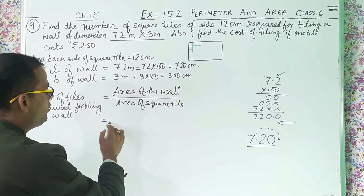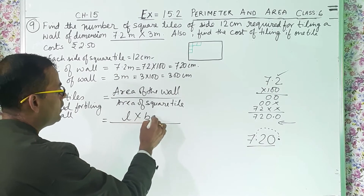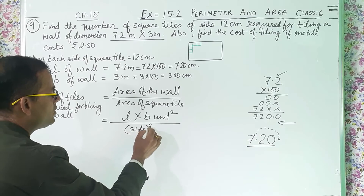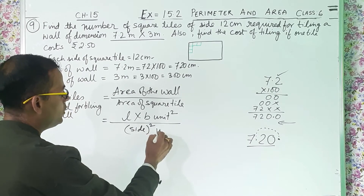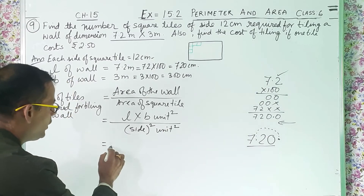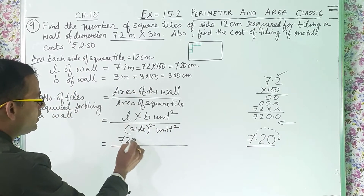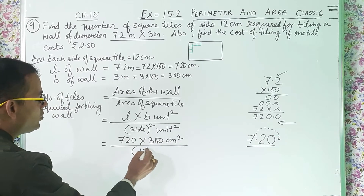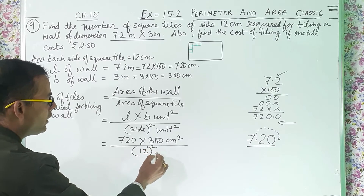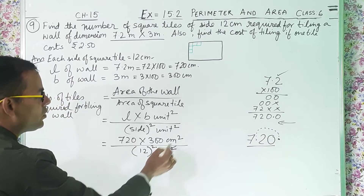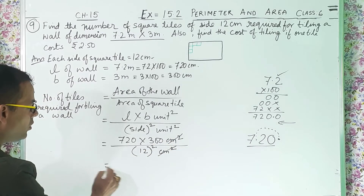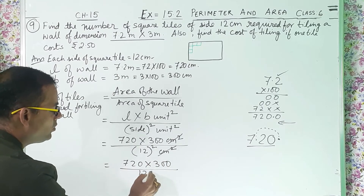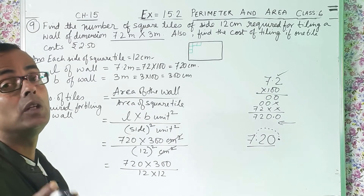Area of the wall formula is length into breadth, and area of the square tile is side squared. So, area of wall = 720 into 300 centimeter square, and area of square tile = 12 squared = 12 into 12. Therefore, number of tiles = 720 into 300 divided by 12 into 12.